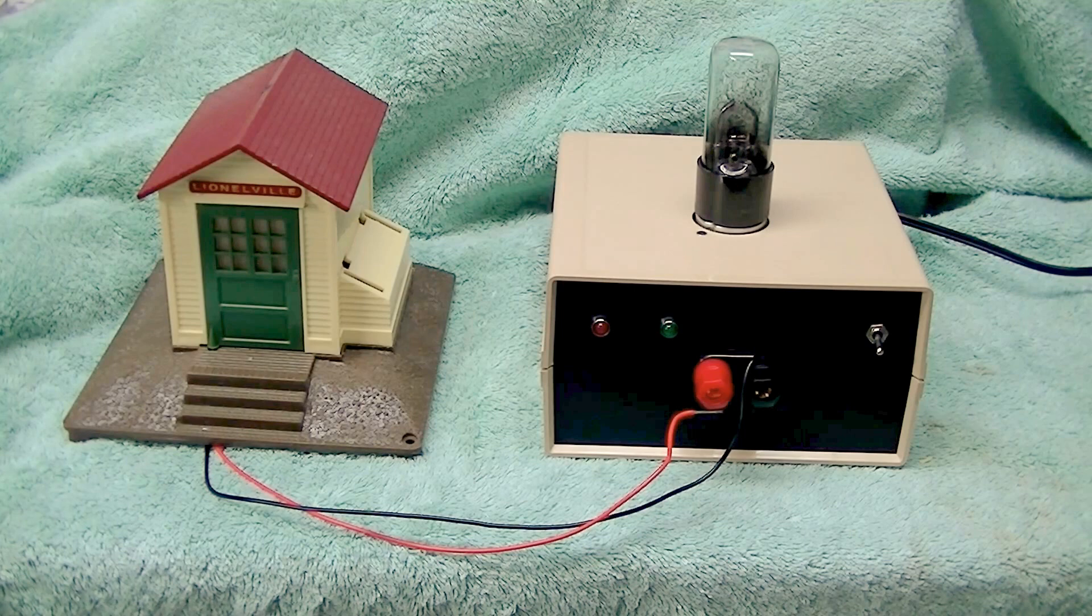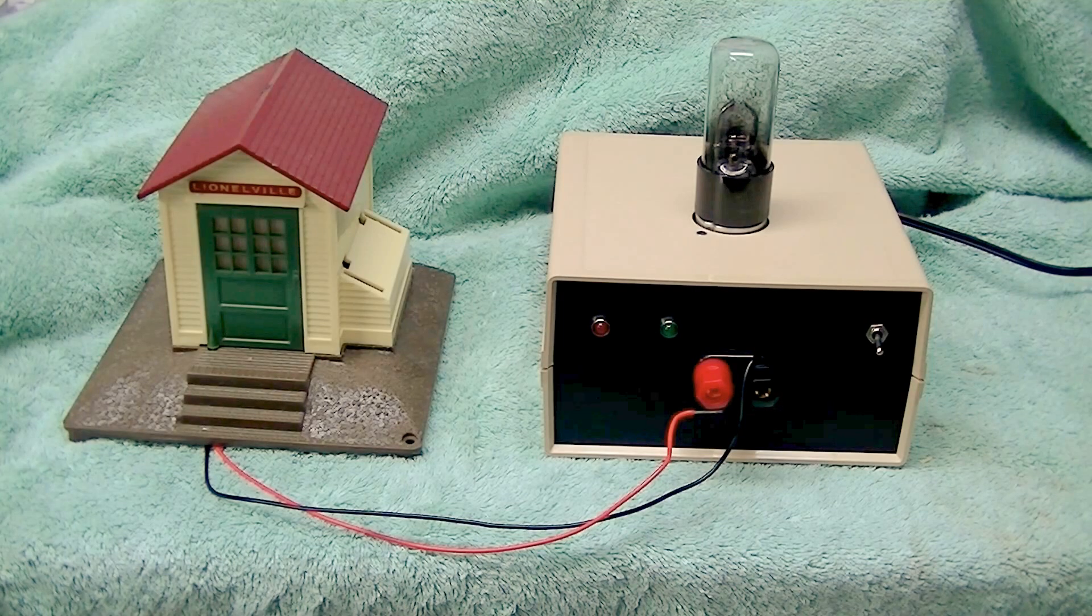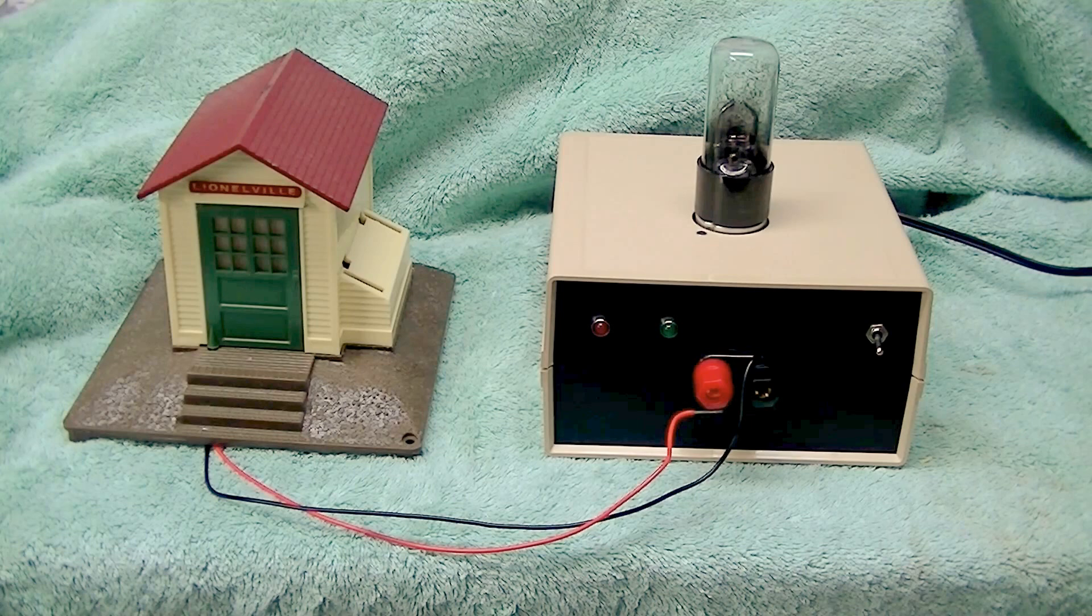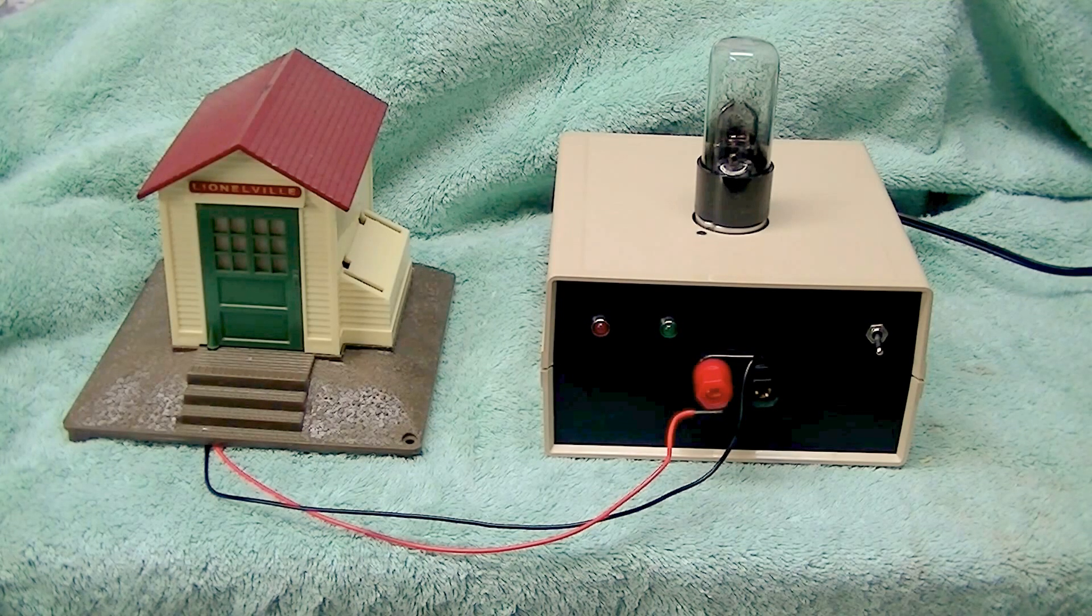This kit uses a vacuum tube filled with argon gas. When load current is flowing through the tube the gas emits a fantastic purple glow. The more current flowing through it the brighter the glow. This kit was conceived and developed by us and is therefore available nowhere else.